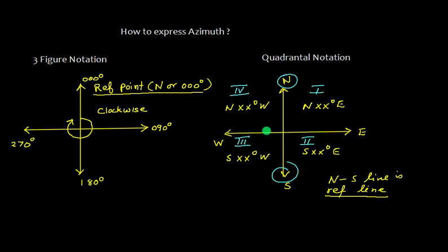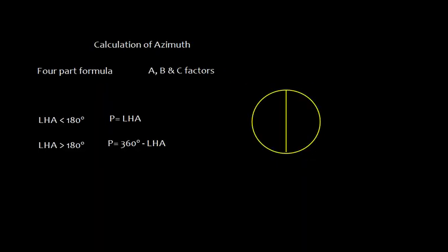You need to measure from the north-south line and go either east or west depending on the quadrant. Now, coming back to calculation — the calculation of azimuth can be performed using the four-part formula. The four-part formula is not discussed here as it is a bit complicated; however, it is converted into three factors: A, B, and C. Before discussing the A, B, C factors, let us understand the factor P.